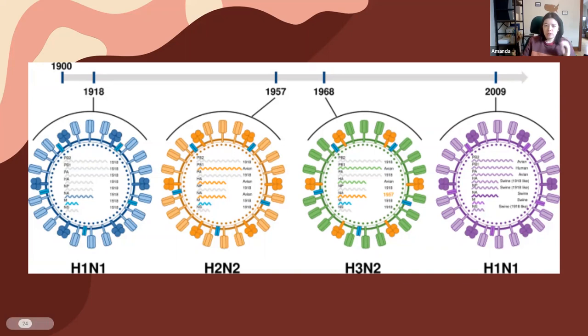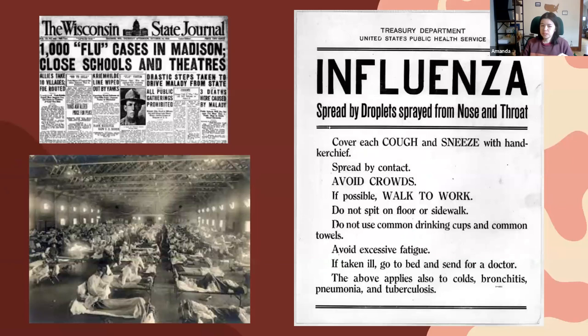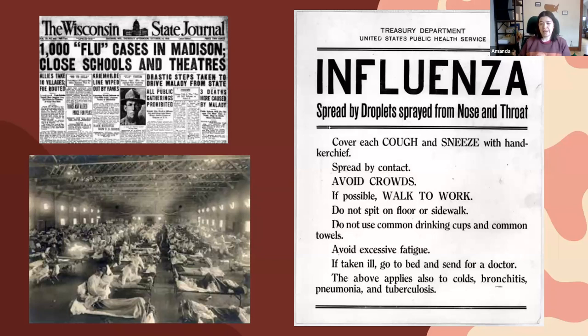In the past century, there have been four major influenza pandemics in humans. We have the 1918 pandemic, probably the most familiar — the Great Influenza or the Spanish flu. It's estimated that about 500 million people were infected, which was at the time about a third of the population, and there were around 50 million deaths.